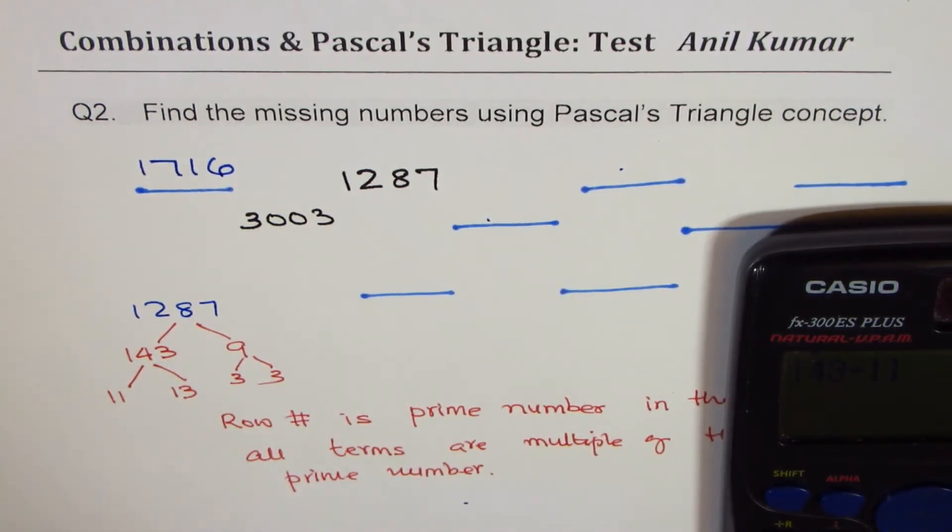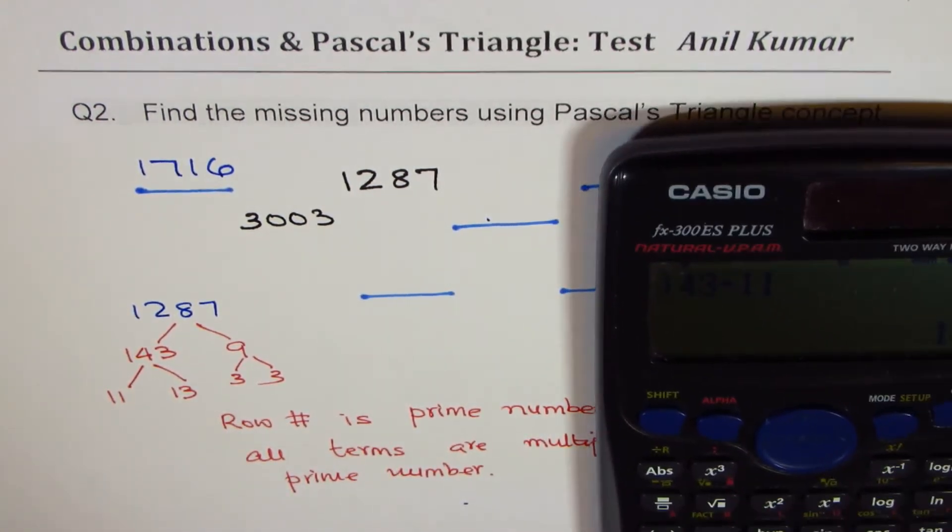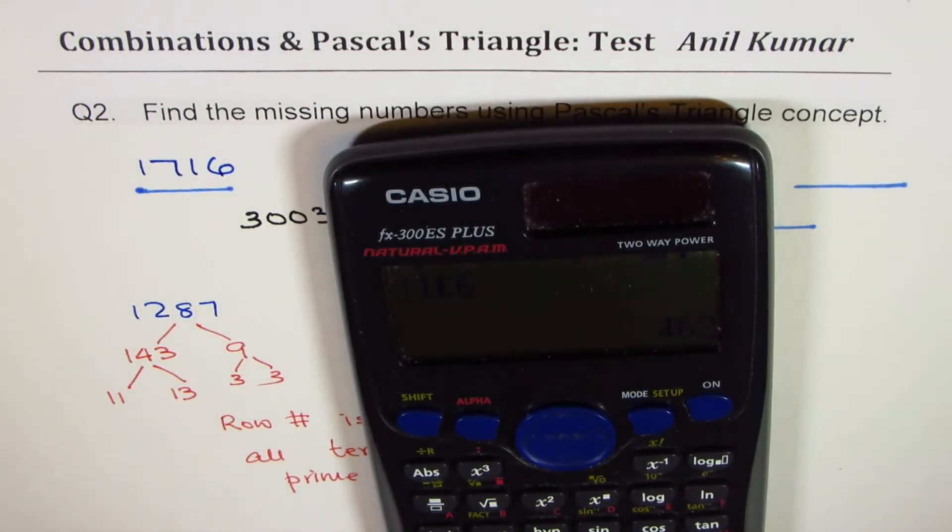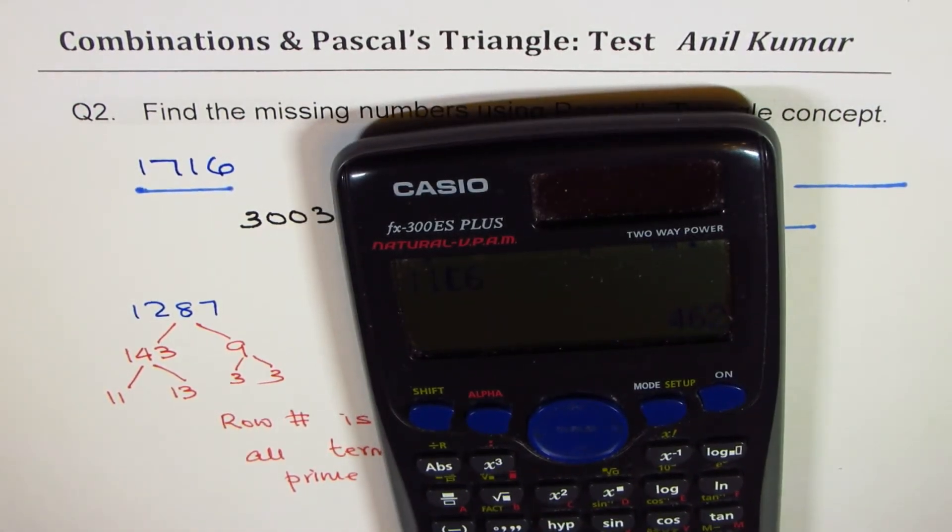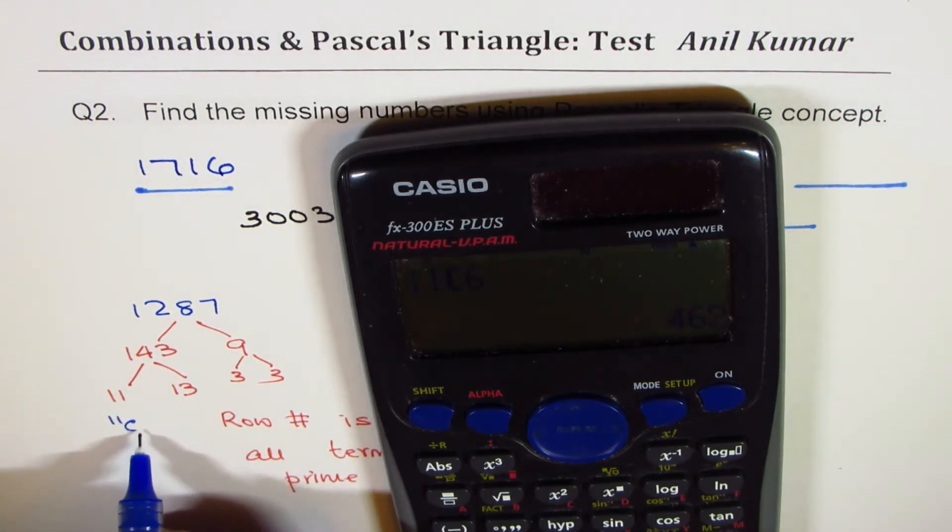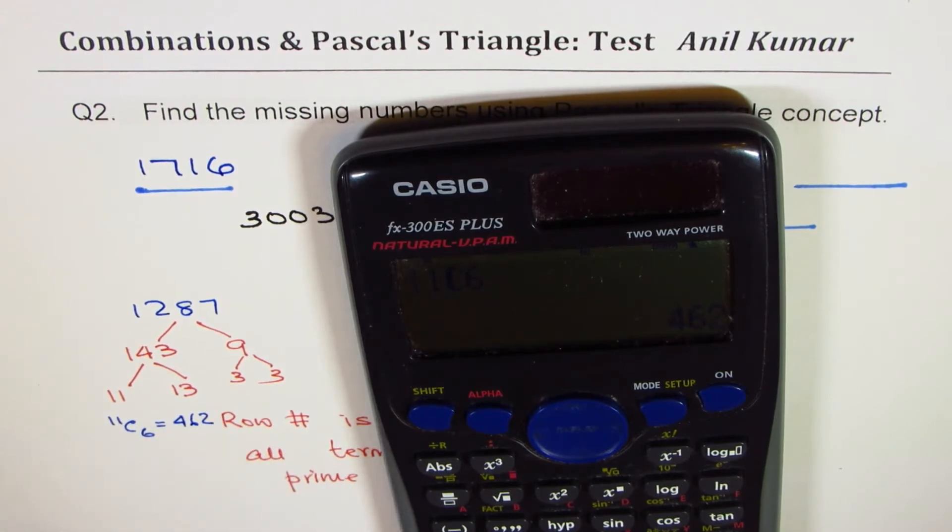Perfect. Now if I try 11, let's say 11C, the highest value will be right in the center. So 11C6 for example is how much? Is only 462. So 11C is not going to work. Right? So we found that 11C6 is 462. So that didn't work.